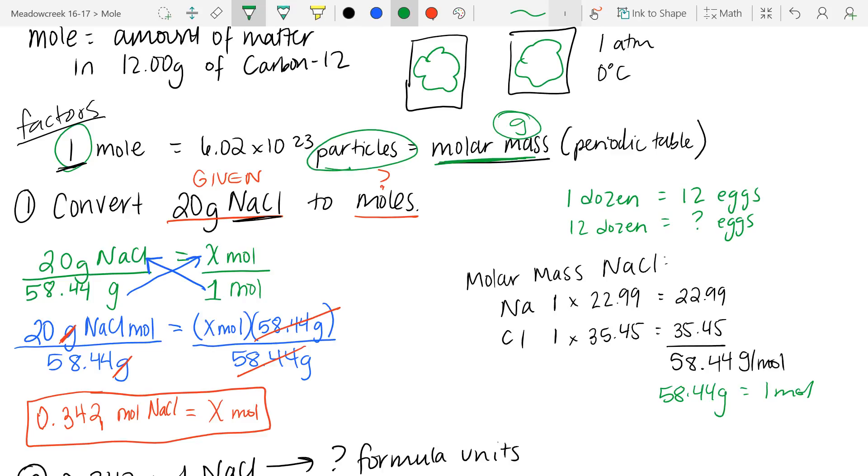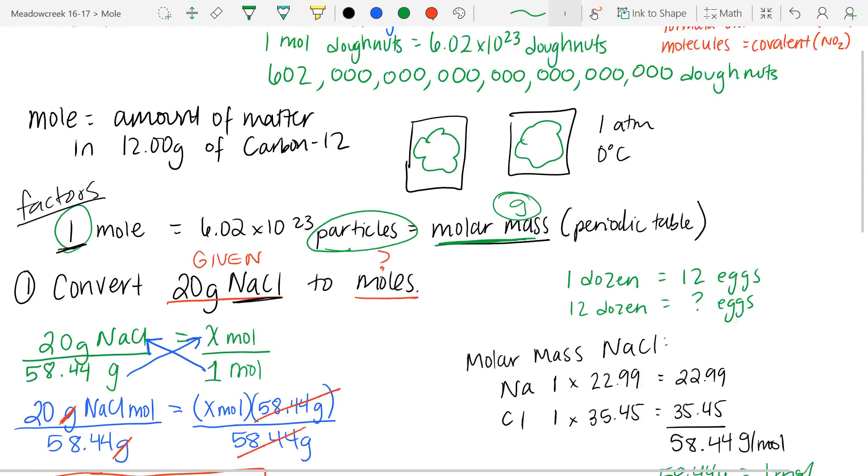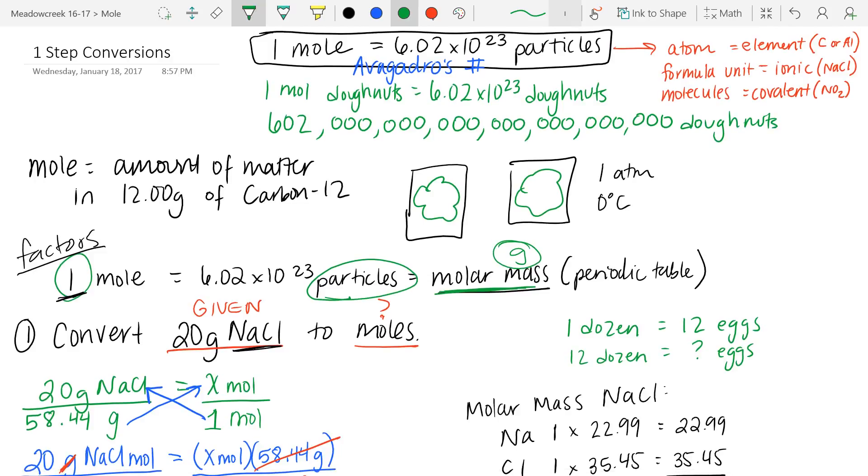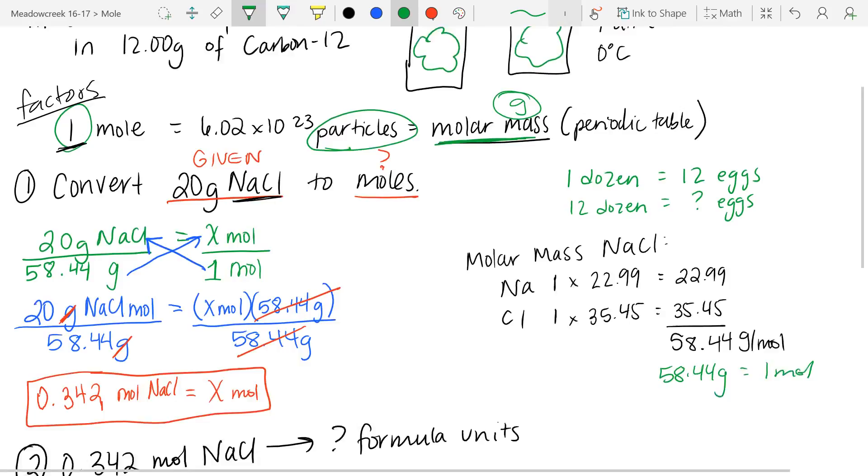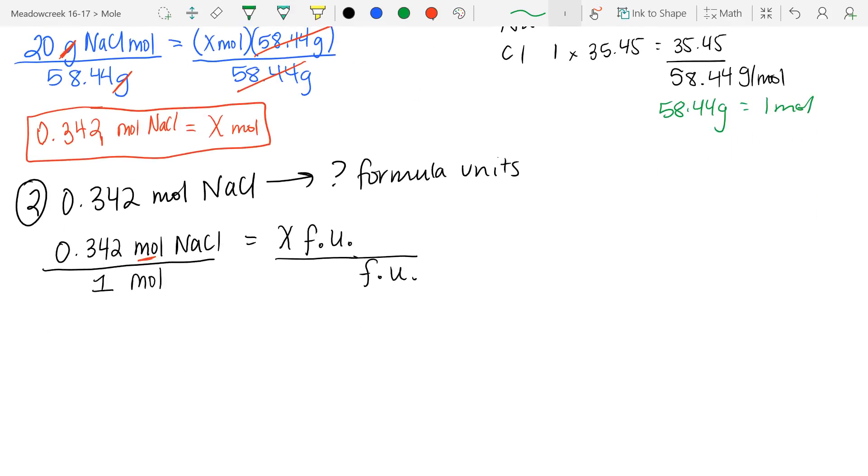we know from our discussions earlier that particles is the science word for things, which means we can talk about formula units dealing with particles down here in the problem below. So, we will write our Avogadro's number, 6.02 times 10 to the 23.